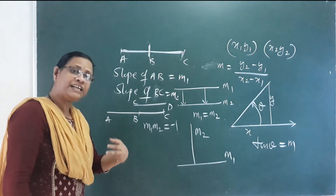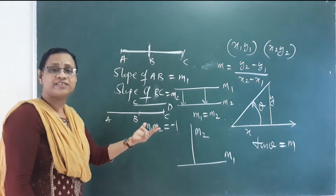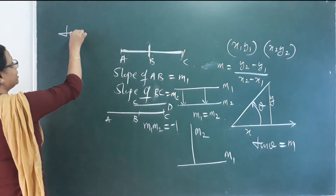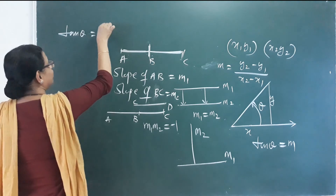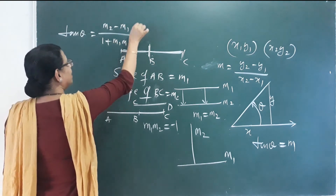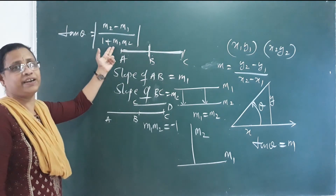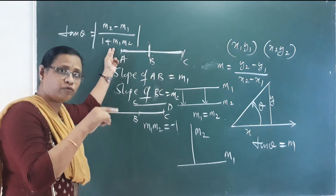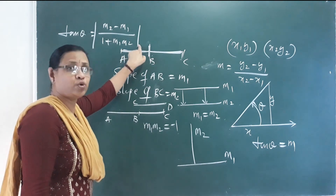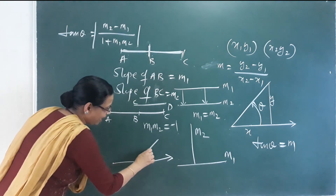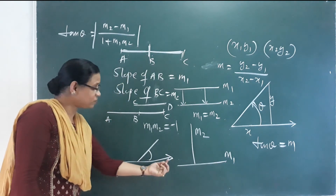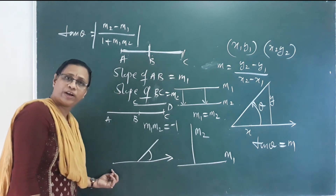The next point: to find the angle between two lines with slopes M1 and M2, the formula is tan theta = (M2 − M1) / (1 + M1·M2). We must express it as an acute angle. The slope always lies between 0 and 180 degrees.